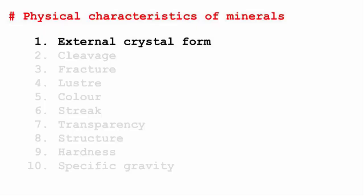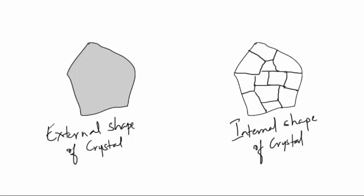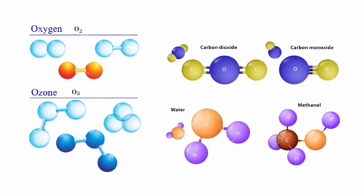The first property is external crystal form. By this we mean the external shape of an individual crystal. What it looks like on the outside is a direct result of how it is formed inside. We know everything is made up of atoms, and a group of atoms bonded together is called a molecule.